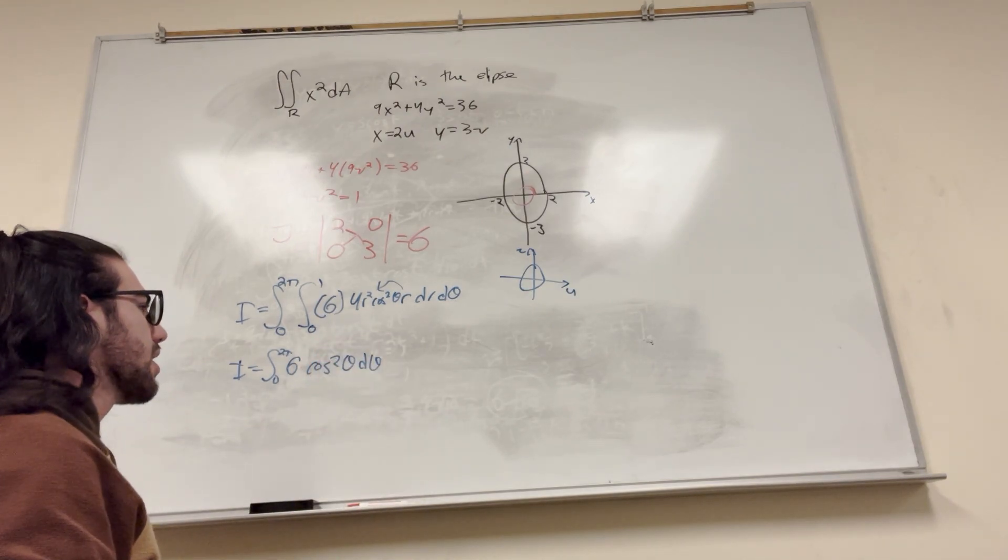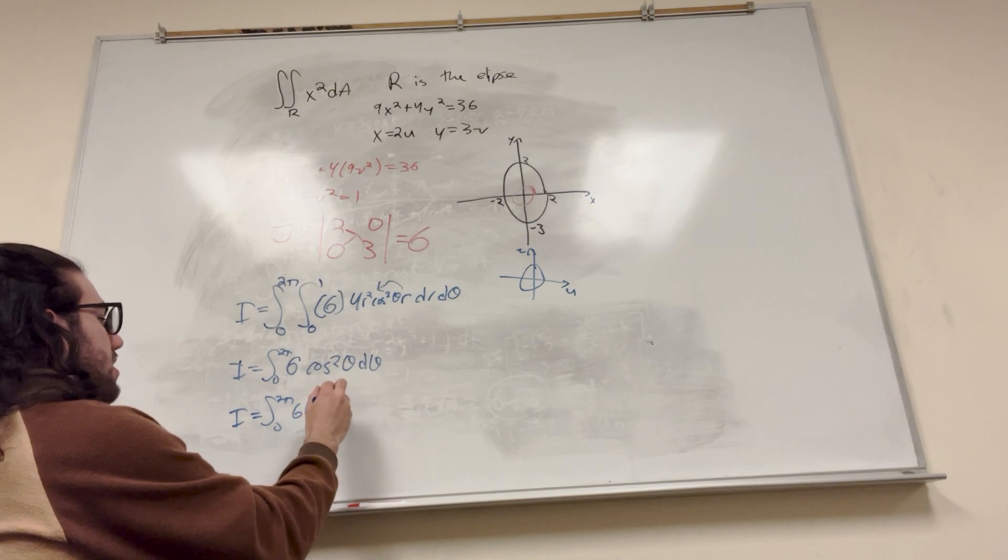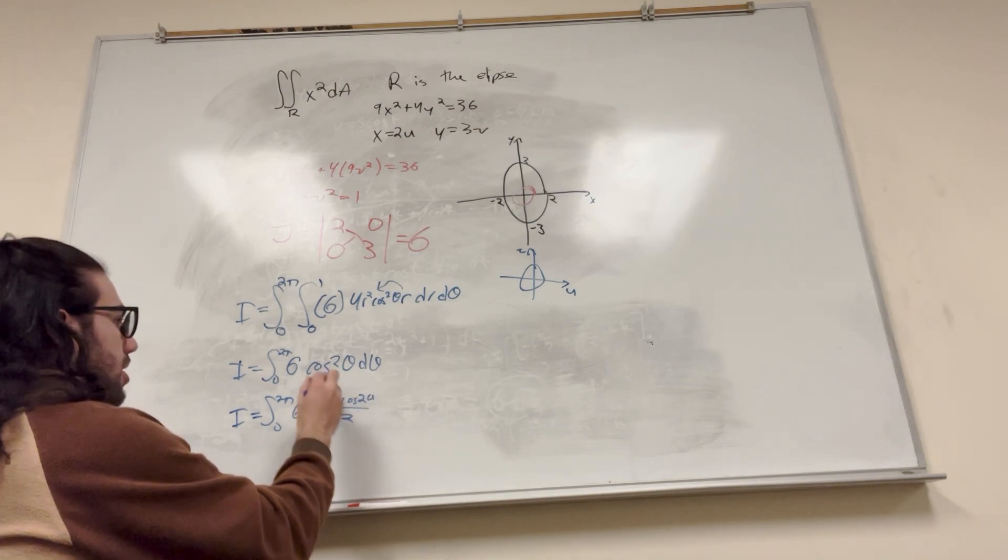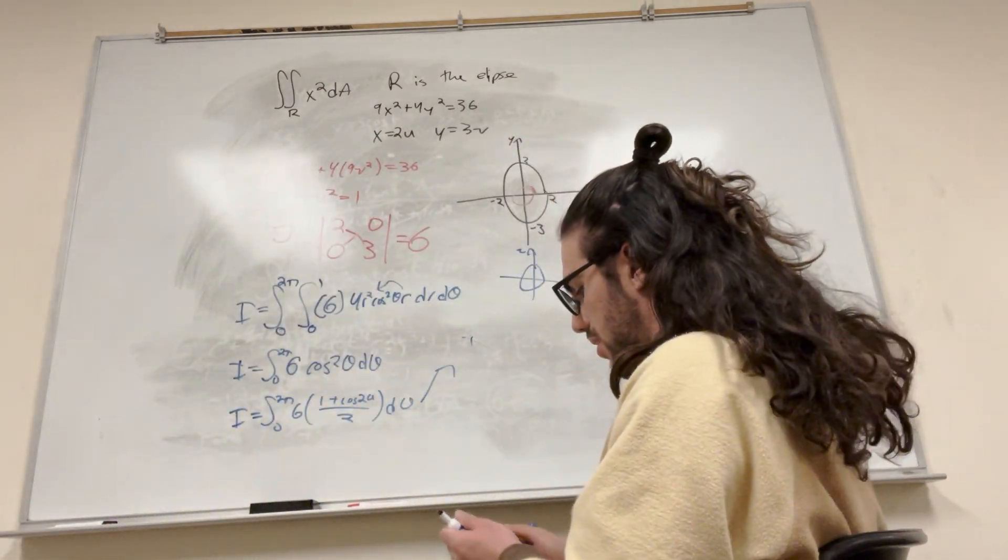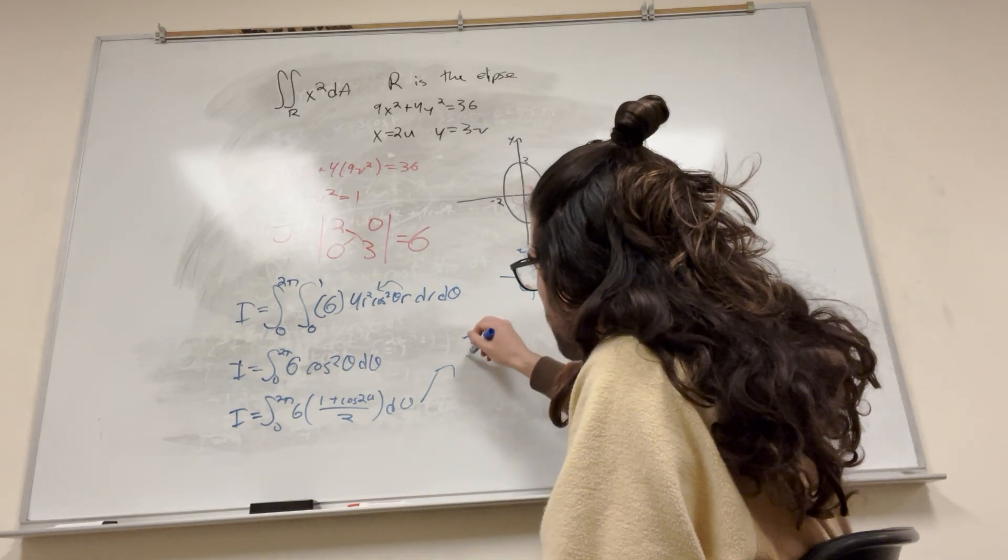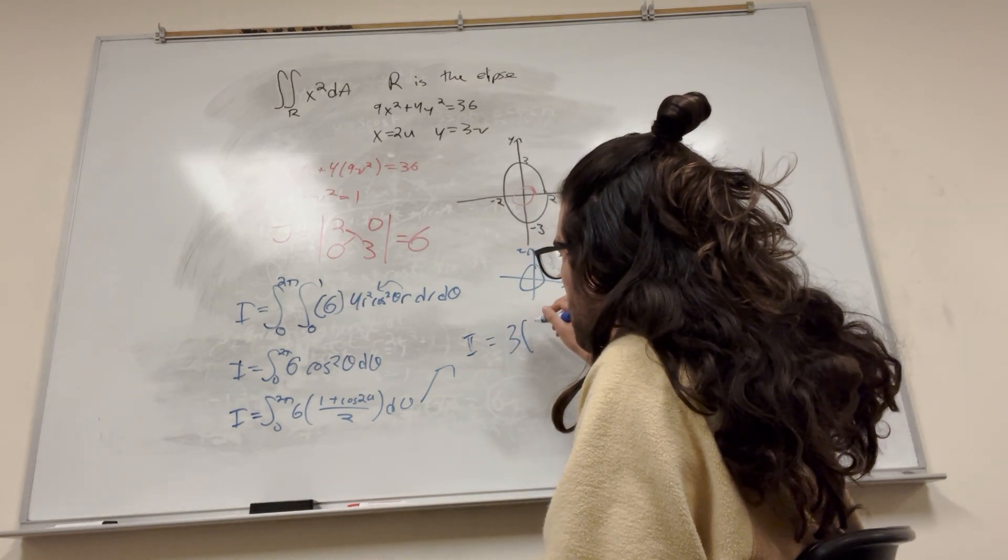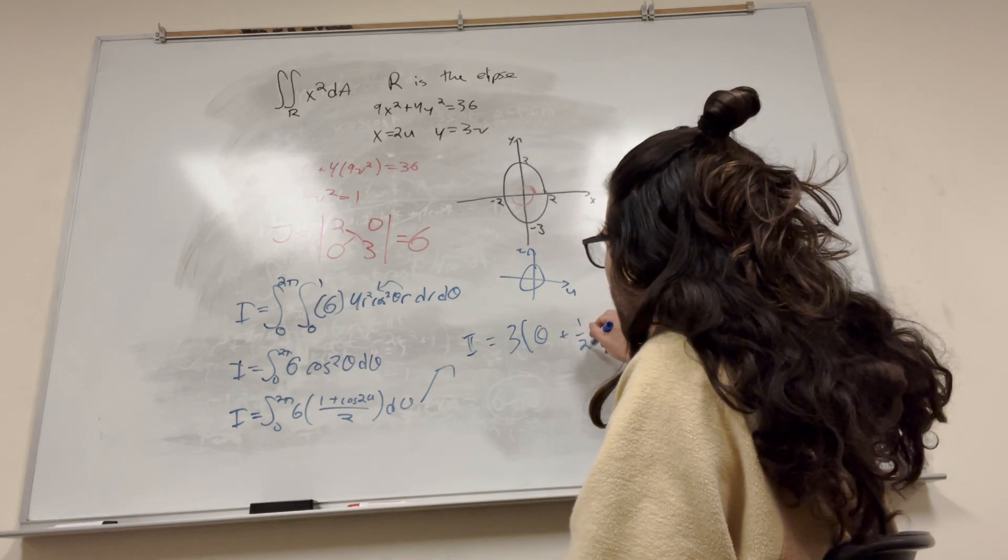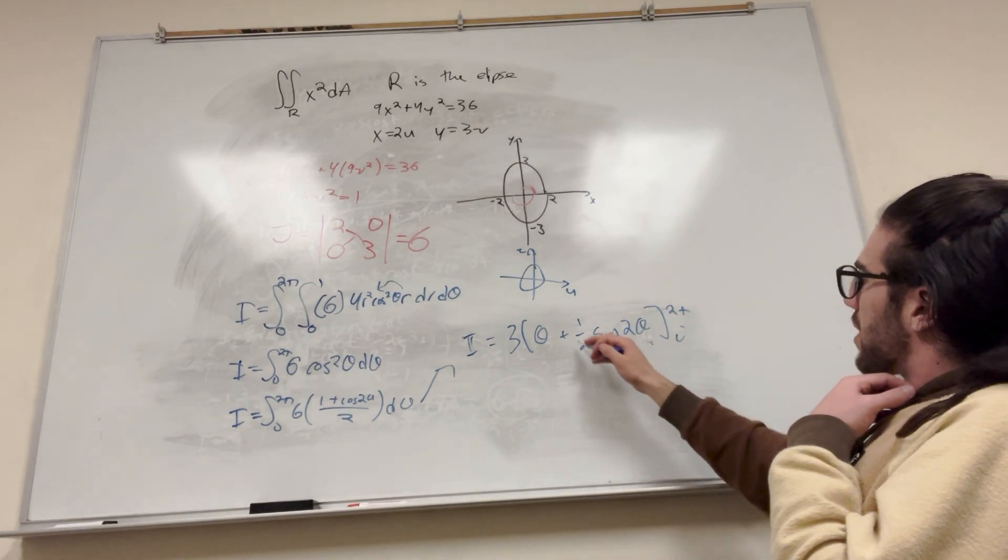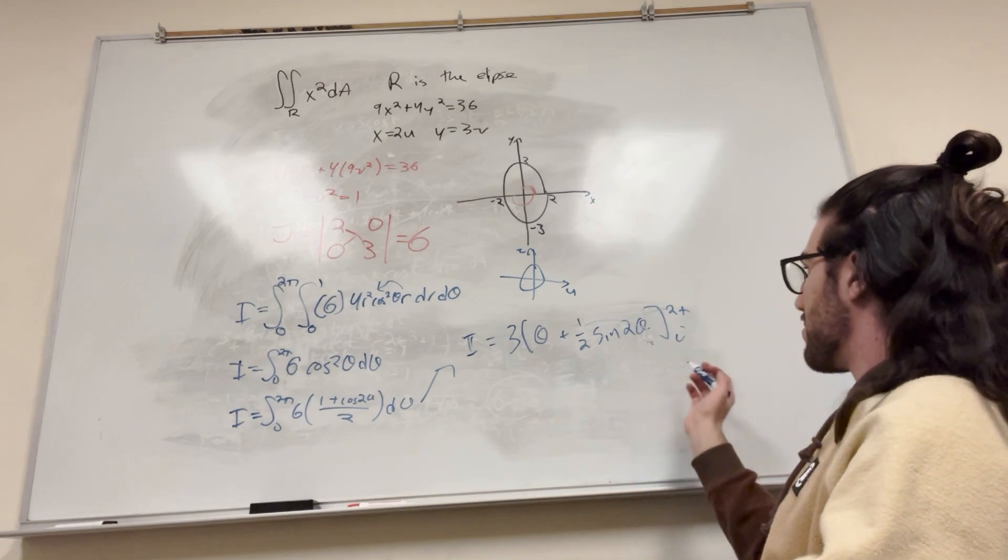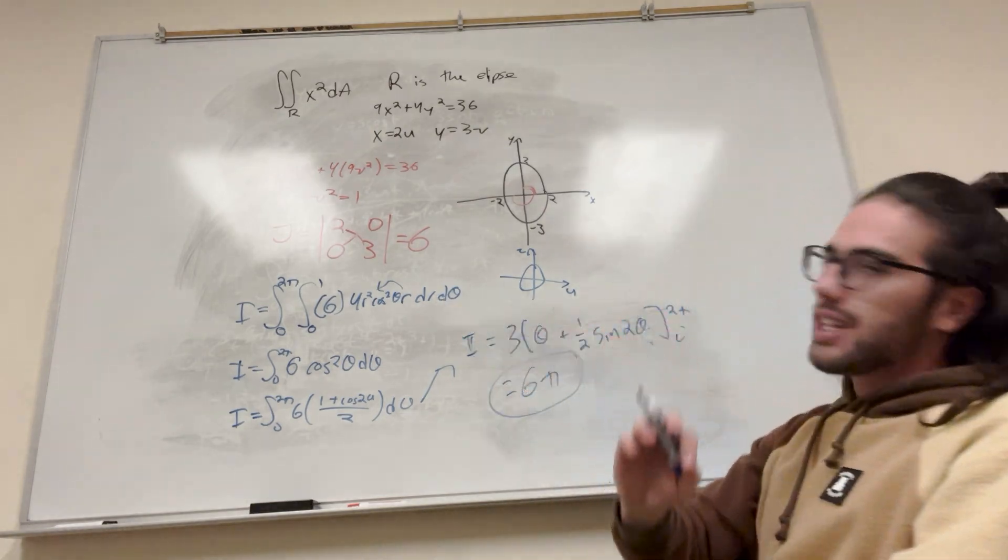So from here, you can use a little bit of an identity. So it's going to be equal to 2 pi. So it's going to be six. But the identity is 1 plus cosine of 2 theta over 2 is equal to cosine squared of theta. And this makes something we can actually integrate. So it becomes integral. So the 6 and the 1 over 2 is going to come out. And it's going to be 3. And then it's going to be theta plus 1 half sine of 2 theta from 0 to 2 pi. I'll give you a hint. This is going to be 0 every time. So it's just going to be 3 times 2 pi minus 0. So it's going to be equal to 6 pi. That's the final answer.